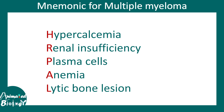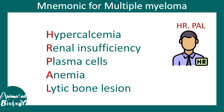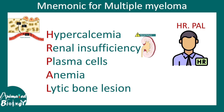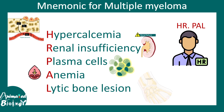Let's talk about a quick mnemonic to understand all the important aspects of multiple myeloma: HR-PAL. H stands for hypercalcemia — too much calcium in the blood. R stands for renal failure. P stands for plasma cells, which have clonally expanded in this cancer. A stands for anemia, and L stands for lytic bone lesions.